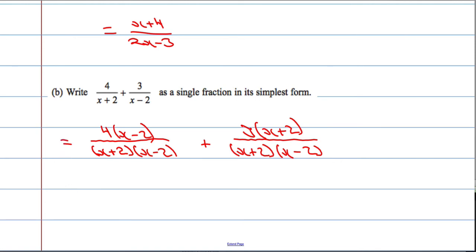Okay. Next stage, multiply out our brackets. So we get 4x minus 8 and 3x plus 6 and because they've got a common denominator, x plus 2 over x minus 2.